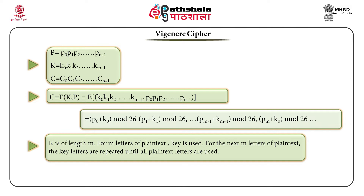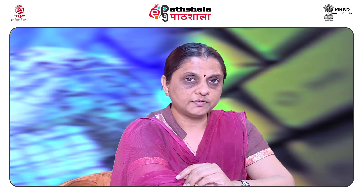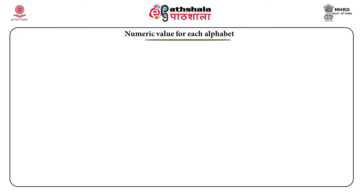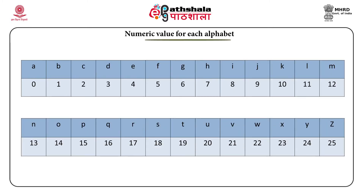To retrieve the plain text from the ciphertext, the formula is: p_i = (c_i - k_i) mod 26. This substitution rule must be performed because we are using arithmetic, so all characters need to be converted to numeric values. The formula is: A is replaced by 0, B by 1, and so on, with Z replaced by 25.